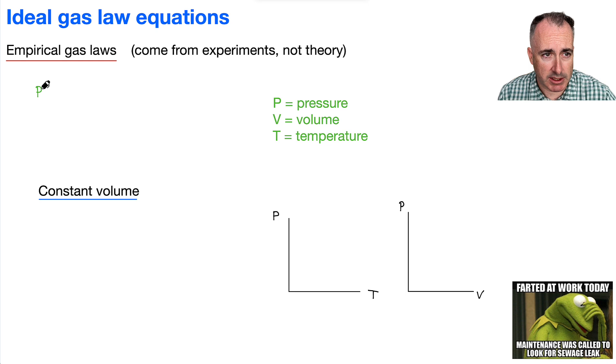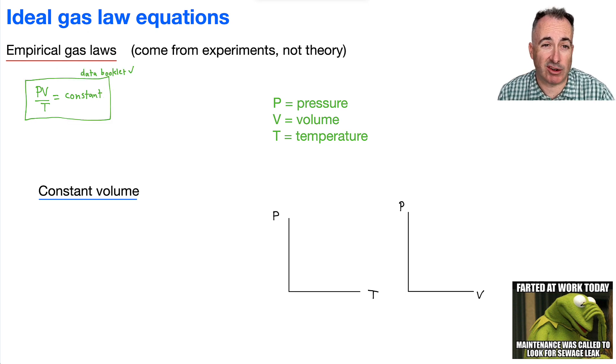So they knew this: PV over T equals a constant. So this was the idea behind this empirical law here. This is in your data booklet, so you don't have to memorize it. But let's go over pressure. Pressure first of all has units of Pascals, or remember it could also be Newtons per meter squared. Volume is going to be in meters cubed. We've got temperature, which is in Kelvin.